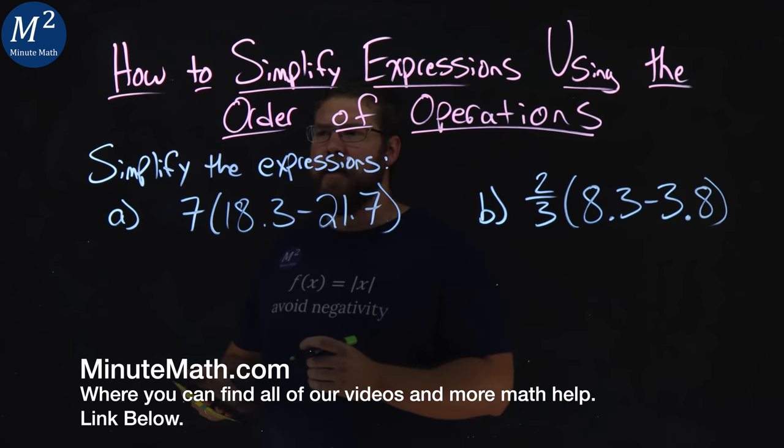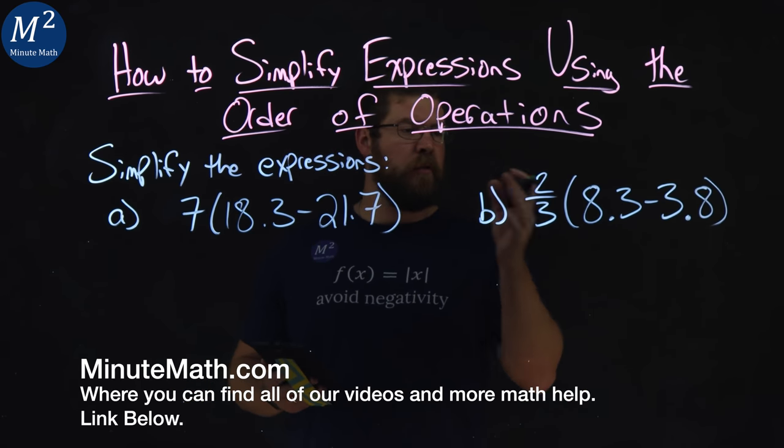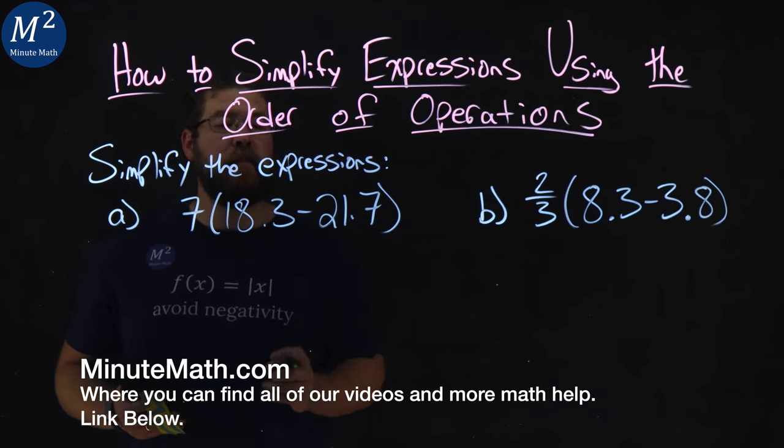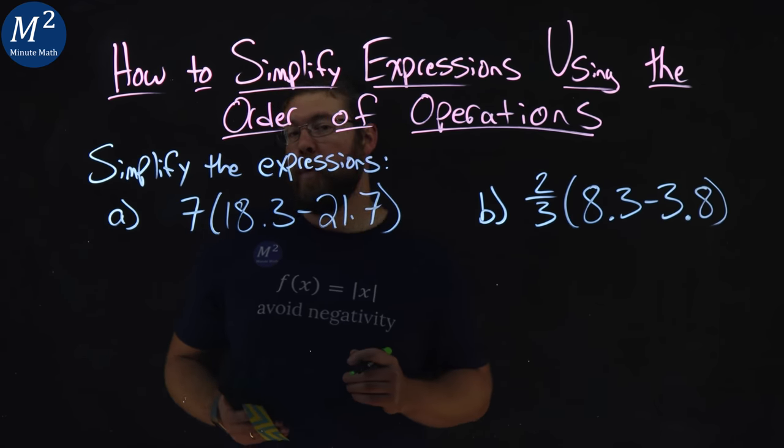We're given this problem right here. Simplify the expressions. We have two parts. Our first part, A, is 7 times 18.3 minus 21.7.